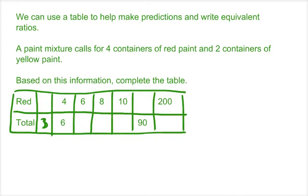We're going to do one more example. We can also use a table to help make predictions and write equivalent ratios. A paint mixture calls for 4 containers of red paint and 2 containers of yellow paint. Based on this information, we're going to complete this table. So we already have the ratio that we were given, 4 containers of red paint, and there are 6 total containers because the 4 containers of red paint plus the 2 containers of yellow paint. So all of these ratios should be equivalent.